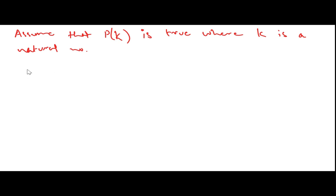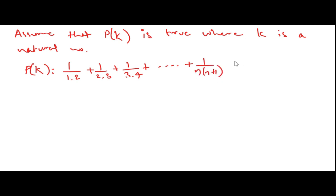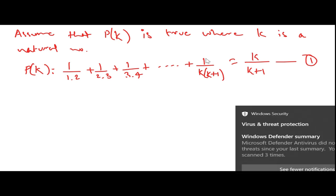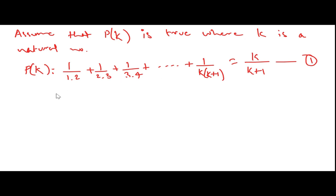P(k) is true means: 1/(1·2) + 1/(2·3) + 1/(3·4) + ... + 1/(k(k+1)) = k/(k+1). Let this be equation number 1, which we assume to be true. Now to prove P(k+1) is true, we put n = k+1.